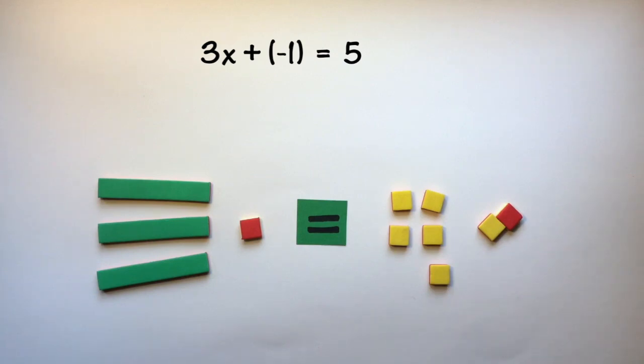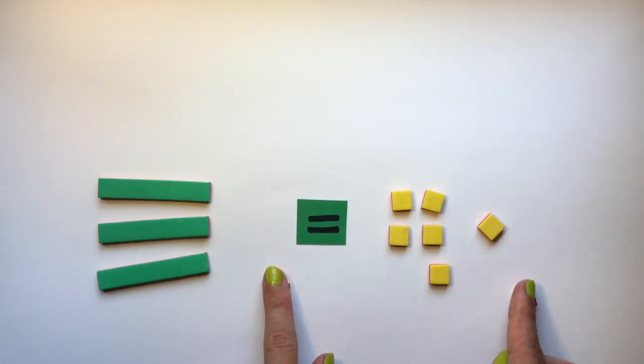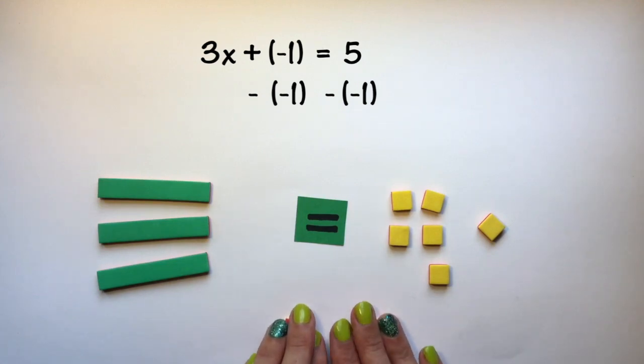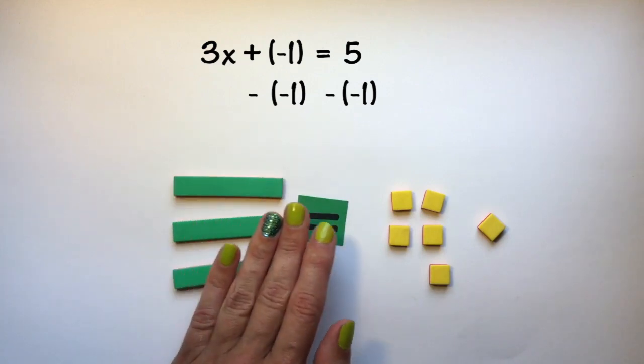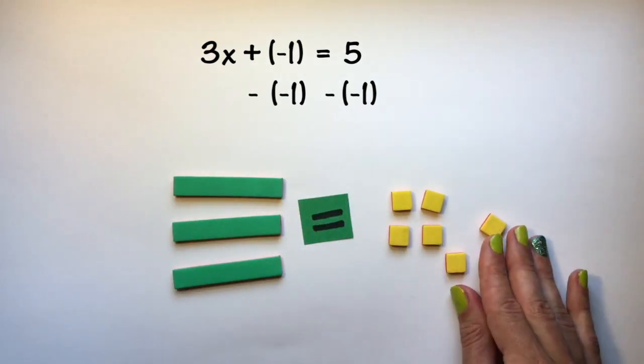Now that I have a zero pair I can remove negative 1 from both sides of the equation keeping it in balance. And now I have that 3x is equal to 6.